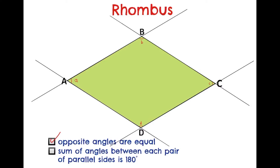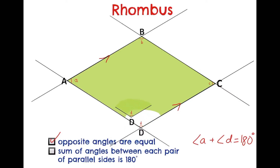The fourth property of a rhombus: the sum of angles between each pair of parallel sides is 180 degrees. This is one pair of parallel sides, so we can say that angle A plus angle D is equal to 180 degrees. I'm going to cut out angle D and shift it all the way up, and you can see it forms a straight line. So yes, that is true.